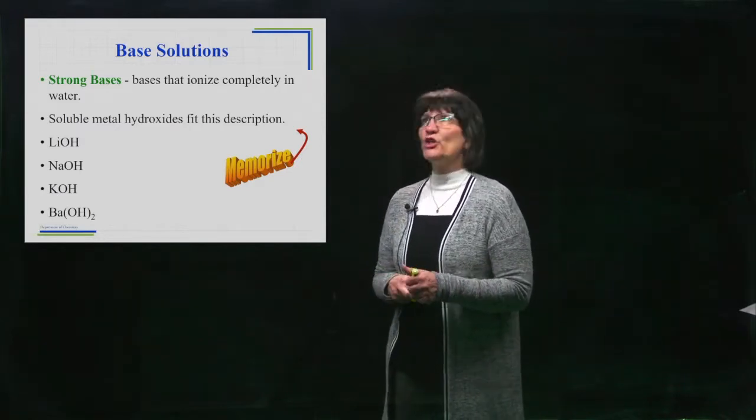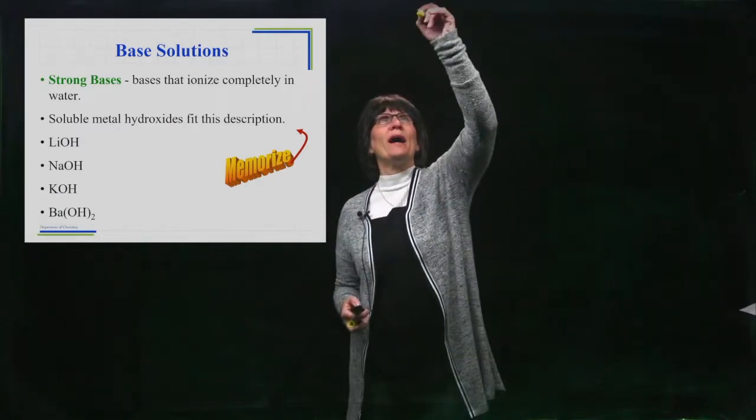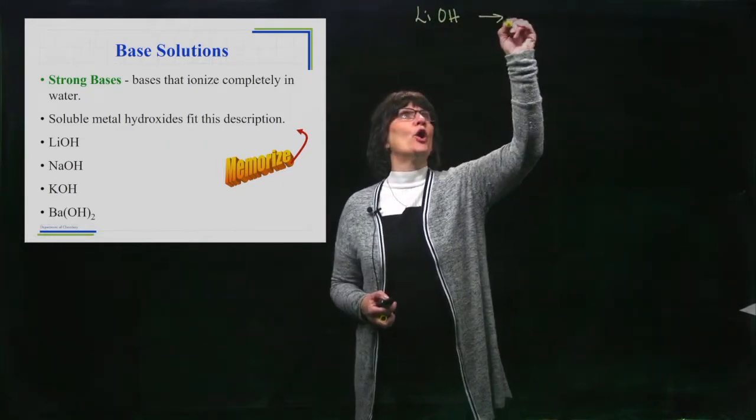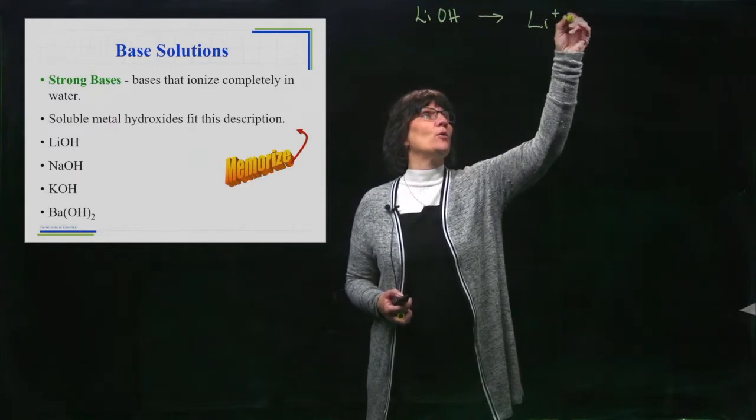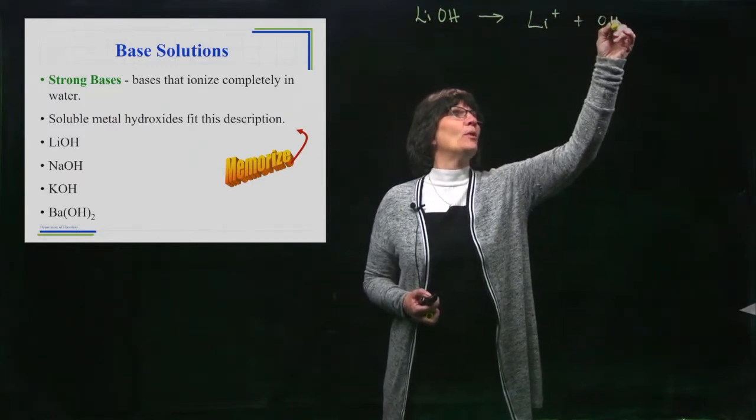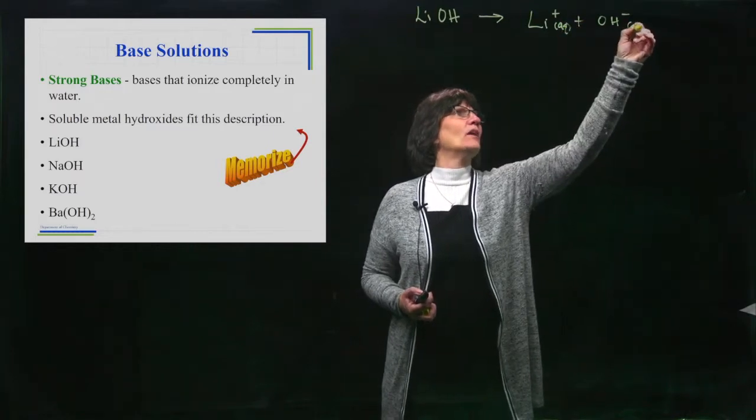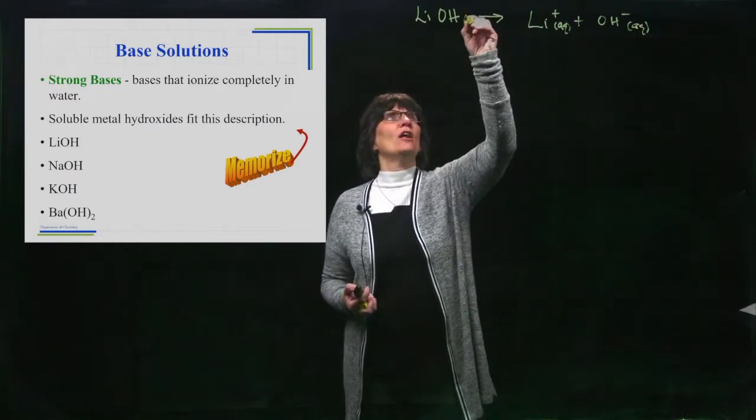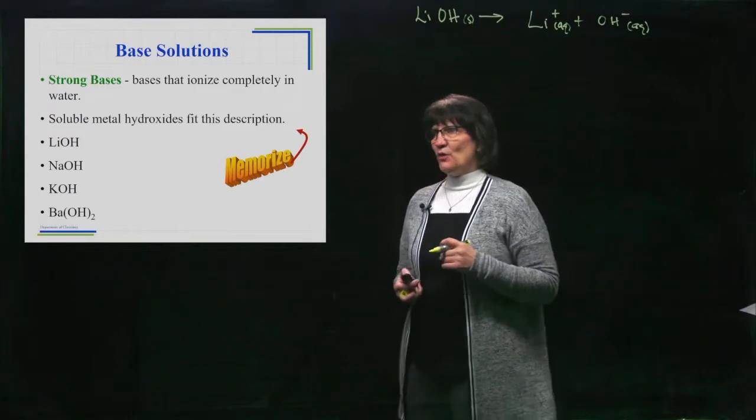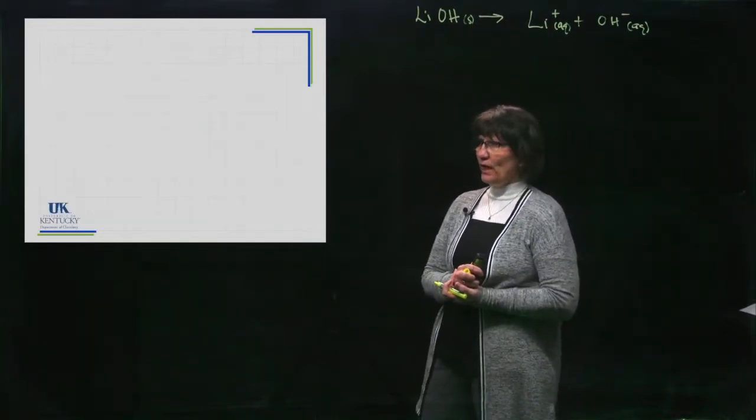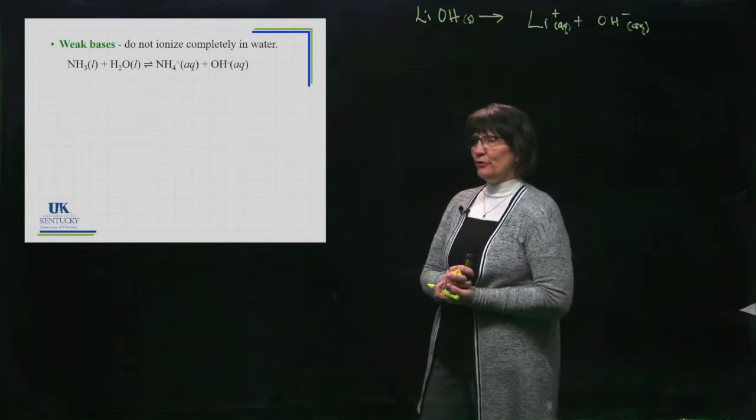What do they do when they dissolve in water? A metal hydroxide, when you dissolve it into water 100%, it's a one-way arrow, breaks apart into these ions. Aqueous, aqueous. You take the solid, you place it in water, and you have this happen 100% of the way.